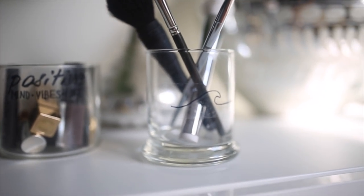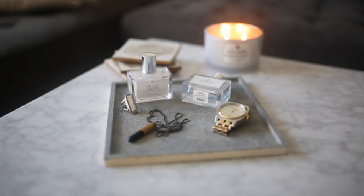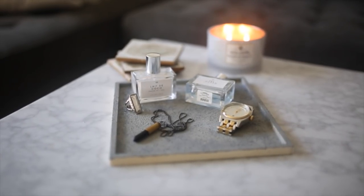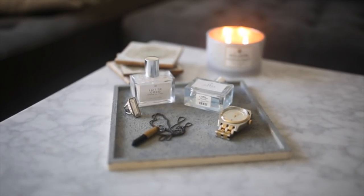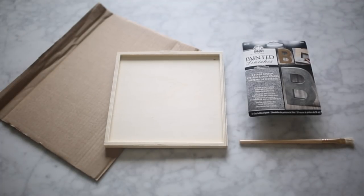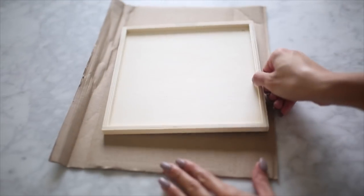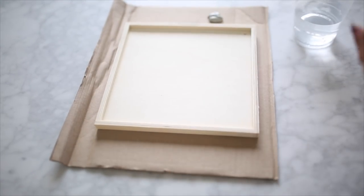This last DIY is a faux concrete tray - it's kind of like a DIY and hack all in one. For this you're going to need a piece of wood or a wooden plaque like I'm using, some sort of cardboard or something to cover your space, this two-step faux concrete paint, and lastly you're going to need a paint brush. Make sure it's very similar to the paint brush that I'm using here. You're just going to place your wood piece on the cardboard.